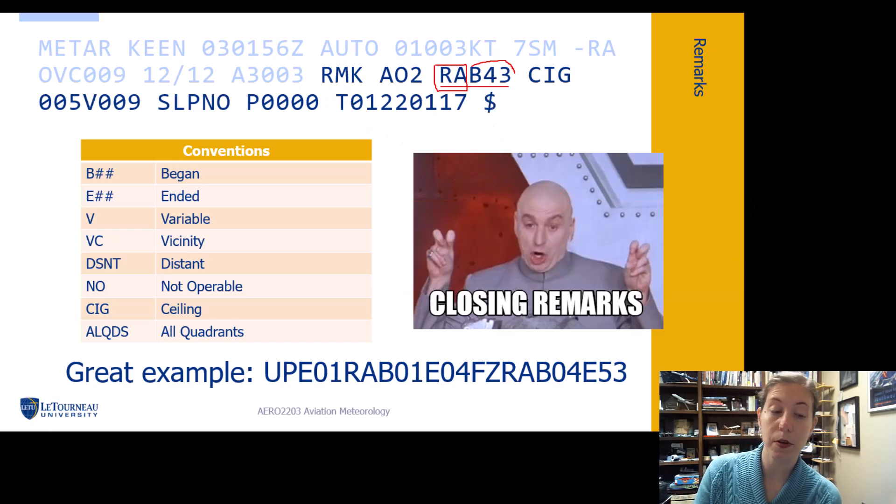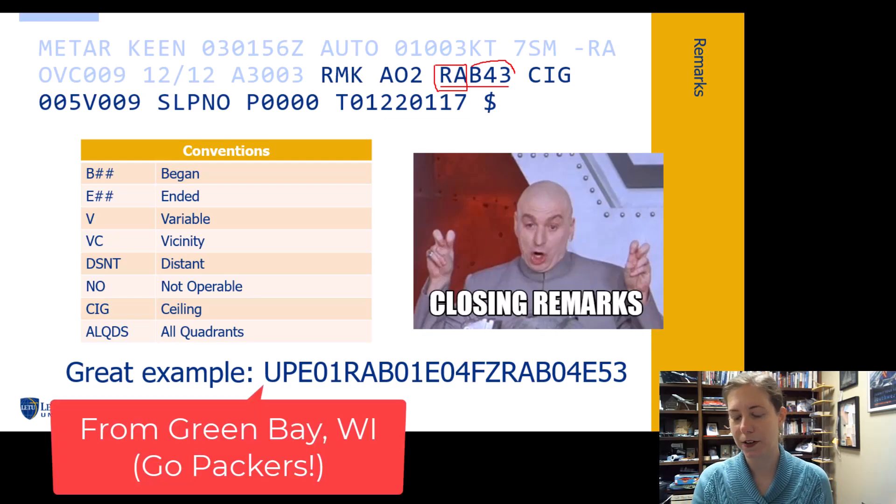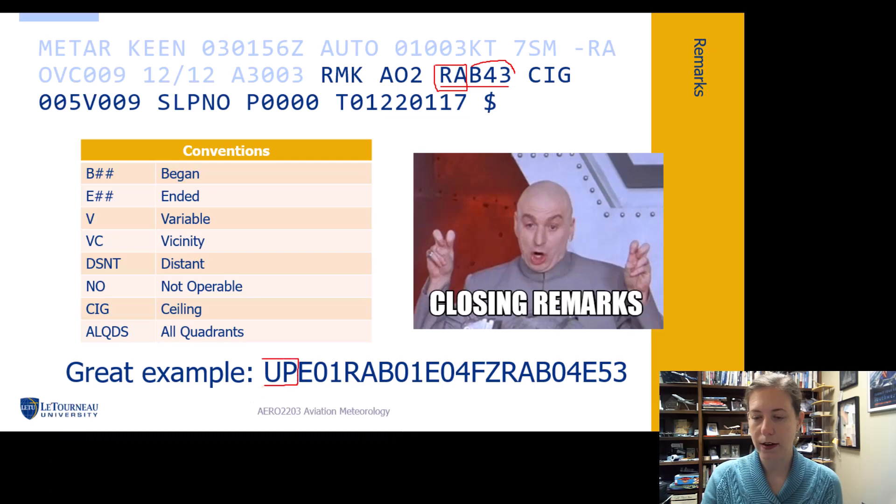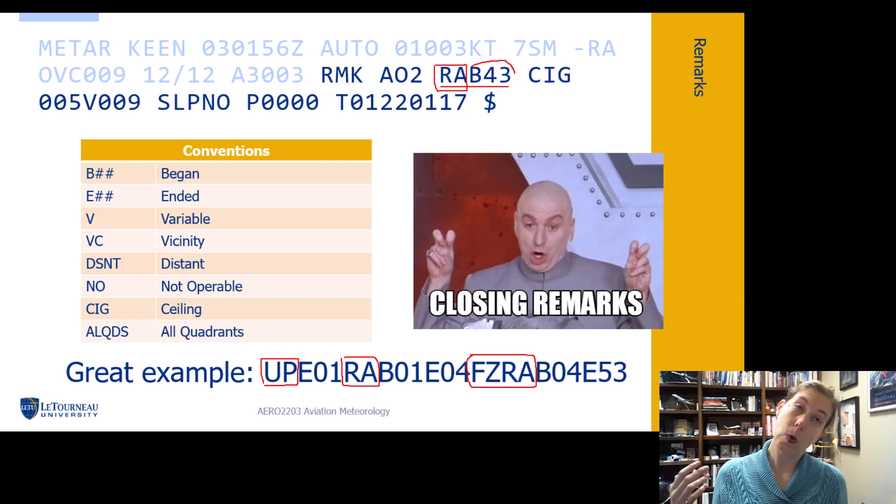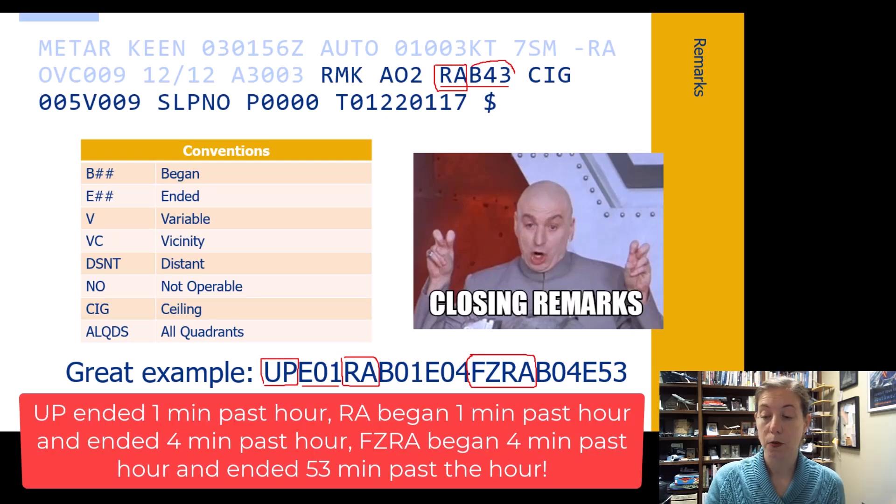Here's an awesome one that I pulled off a real METAR from Green Bay, Wisconsin. Yeah, go Packers. We have UP, I find it best to break these things up. I'm going to look for my precipitation types first. We have RA, that's the type that we've seen. We have FZRA, that's another type that I've seen. Remember what UP is: unknown precipitation. Something's falling from the sky, I don't quite know what it is. Unknown precipitation, E is ended, so it ended one minute past the hour. Rain began at one minute past the hour and it ended at four minutes past the hour. Then freezing rain began at four minutes past the hour and it ended at 53 minutes past the hour. Perfect. So that's how you read one of those.